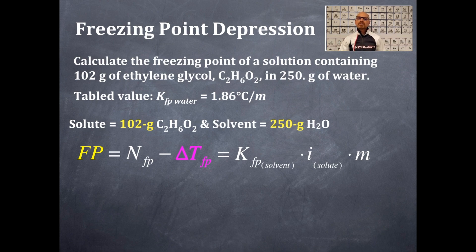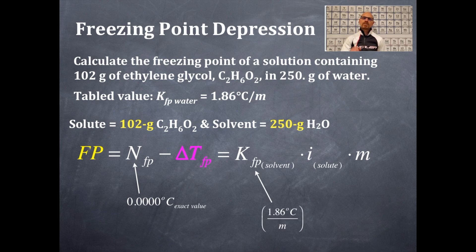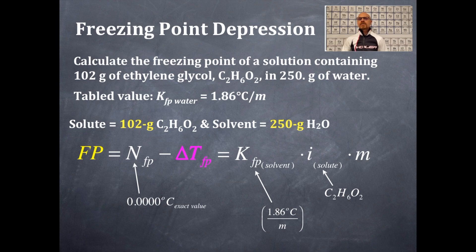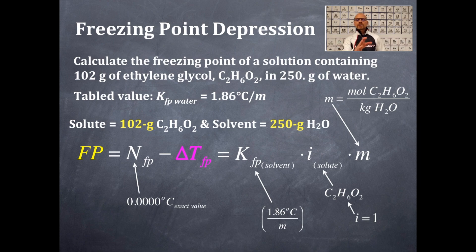For the solvent, the normal freezing point of water is zero degrees Celsius. We already have the constant for the freezing point: 1.86 degrees Celsius per molal. The Van't Hoff factor for ethylene glycol is one. Now we need to determine the molality, which is the moles of solute divided by the kilograms of water. We have 102 grams of ethylene glycol — we'll convert that into moles as the numerator — and 250 grams of water, which we'll convert to kilograms as the denominator.